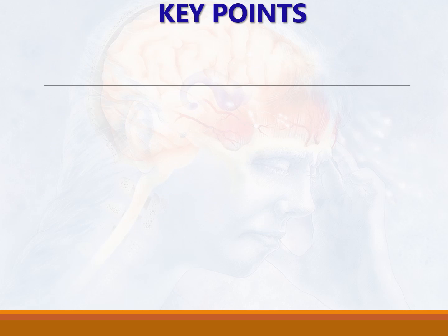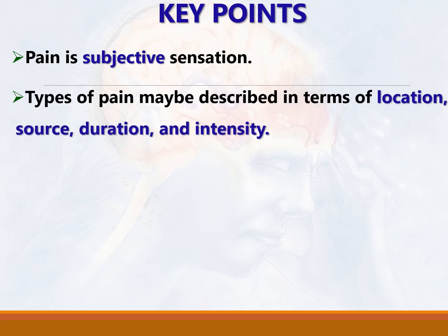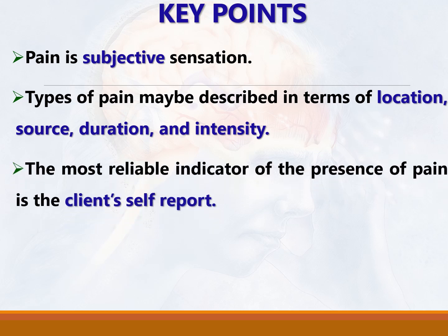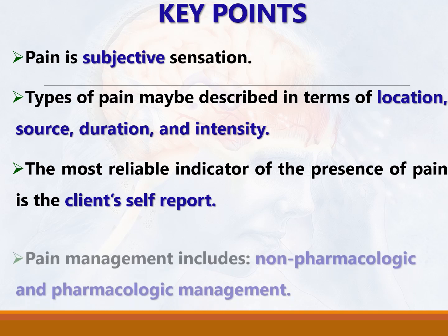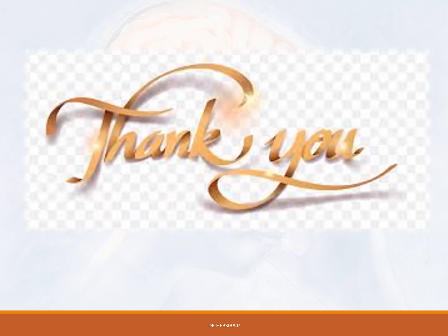In summary, pain is a subjective sensation. Types of pain may be described in terms of location, source, duration and intensity. The most reliable indicator of the presence of pain is the client's self-report. Pain management includes non-pharmacologic and pharmacologic management. We also discussed the physiology of pain and the gate control theory. I hope you understand this topic. Thank you for watching.